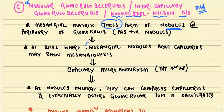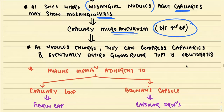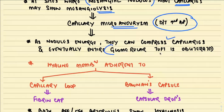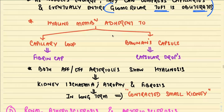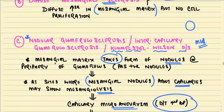KW nodules occur where mesangial nodules are close to the capillaries. The normal mesangium supports capillaries, but in KW lesion there is mesangiolysis, compromising the border between mesangium and capillary, leading to capillary microaneurysms due to excessive blood pressure. As nodules enlarge, they compress capillaries and eventually the entire glomerulus becomes obliterated. Two associated lesions: hyaline membrane attached to the capillary loop is called a fibrin cap; the same hyaline membrane attached to Bowman's capsule is called a capsular drop.